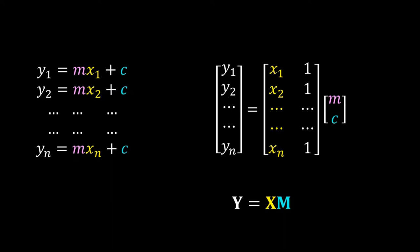But this is an over-determined system. We have two unknowns but more than two equations. So we cannot have unique values for m and c that will satisfy all the n equations.